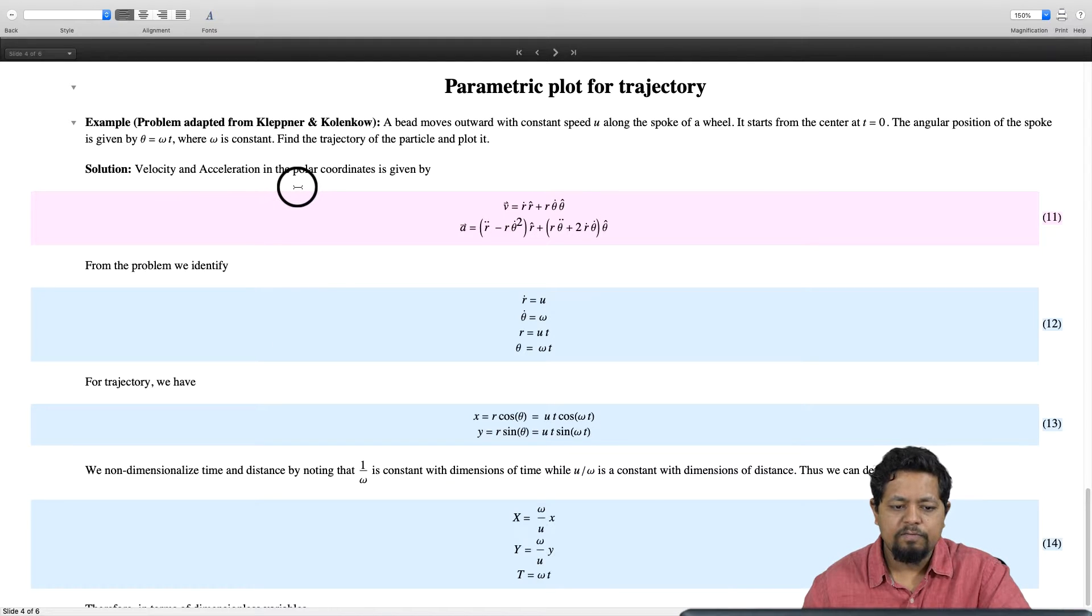To solve this problem, we will write down velocity and acceleration in polar coordinates. Velocity in polar coordinates is given by r dot r hat plus r theta dot theta hat, and acceleration is given by r double dot minus r theta dot square r hat plus r theta double dot plus 2 r dot theta dot times theta hat.